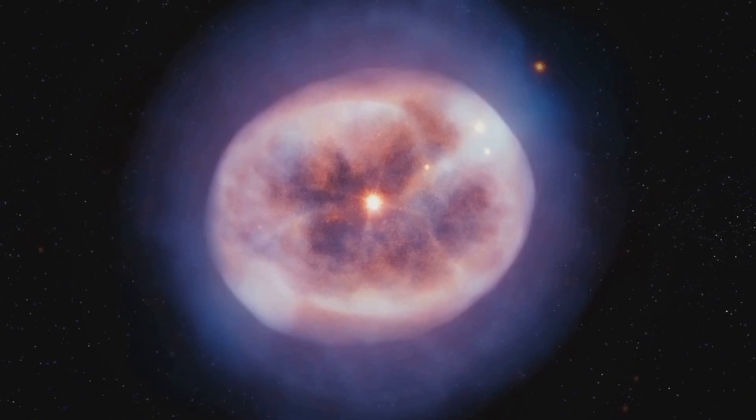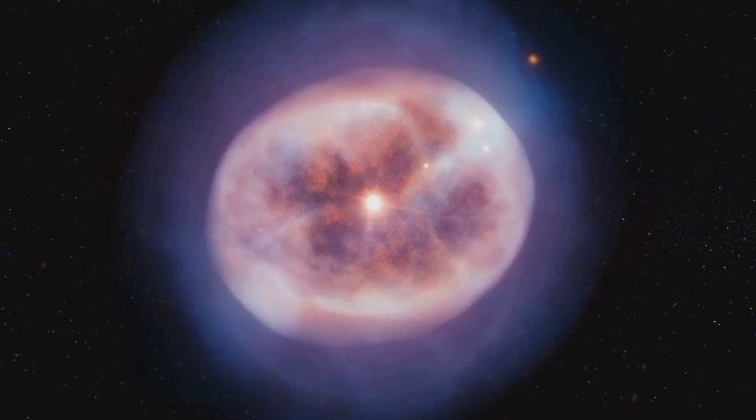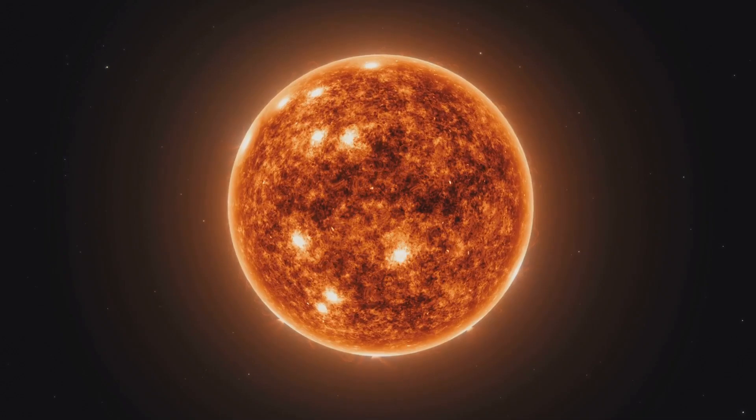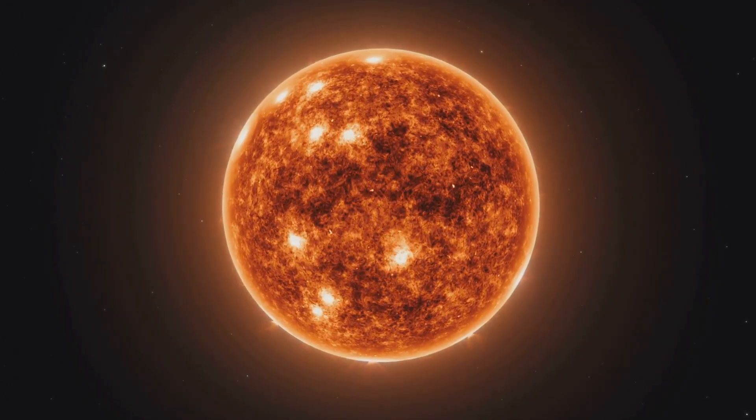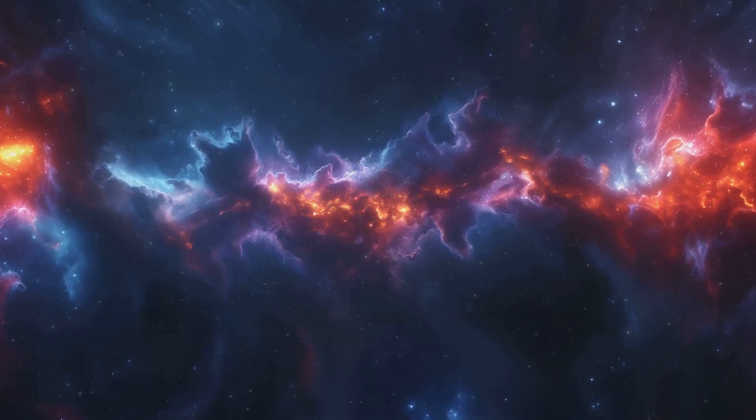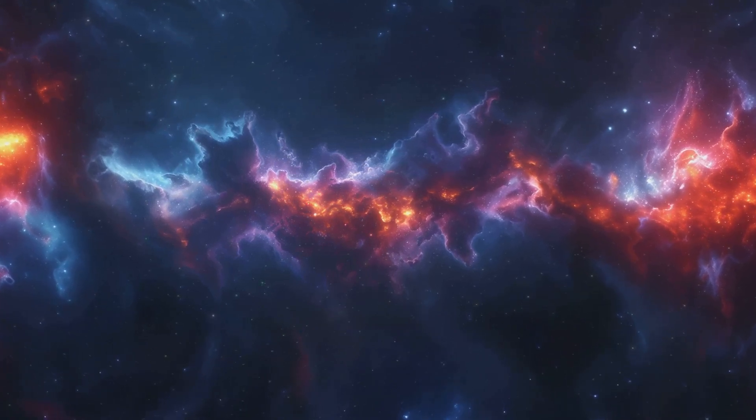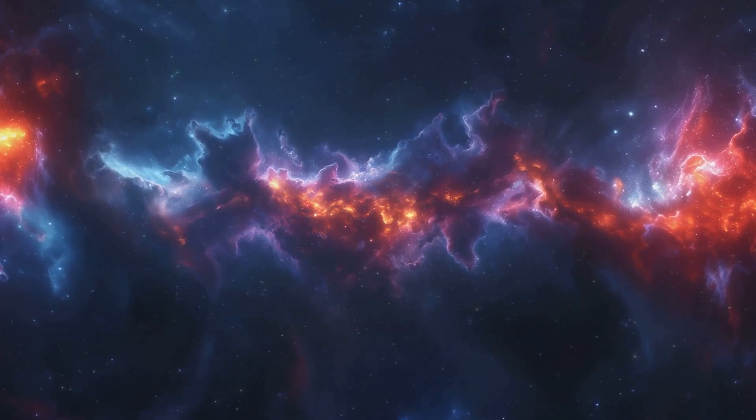like our sun, that have shed their outer layers into space. At the heart of the Boomerang Nebula lies a dying star, a red giant in its final stages of life. As this star sheds its outer layers, it expels gas and dust outward at incredible speeds, creating the nebula's distinctive bow-tie shape.